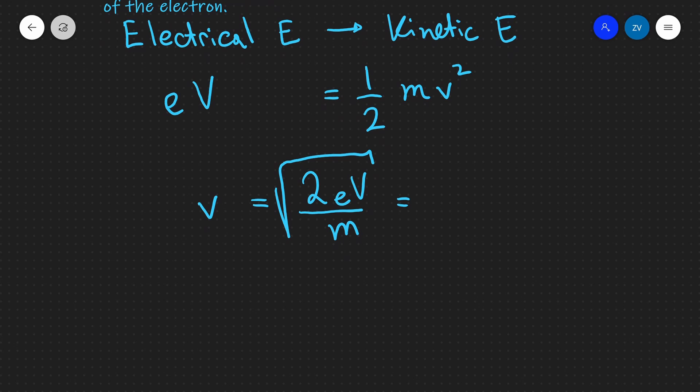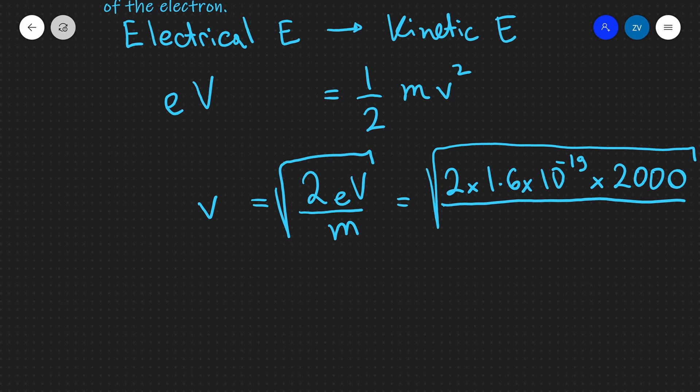By inputting some numbers over here I'm going to get that this is going to equal the square root of 2 times the charge of an electron which is 1.6 times 10 to the power of minus 19 coulombs, multiplied by the voltage which in this case is 2000 volts, and I'm going to be dividing by the mass of an electron which is 9.11 times 10 to the power of minus 31.